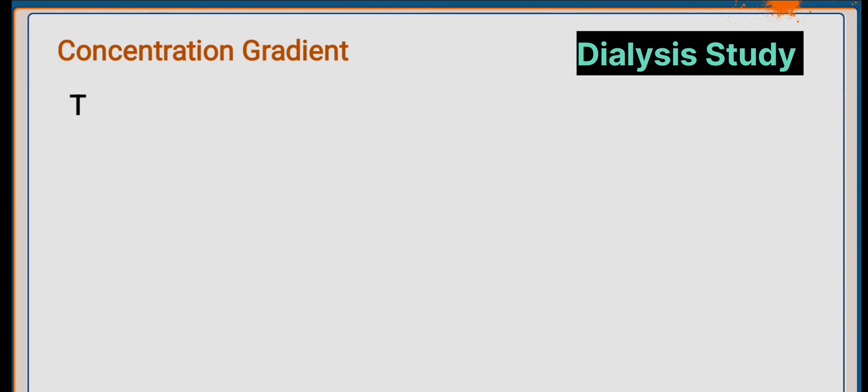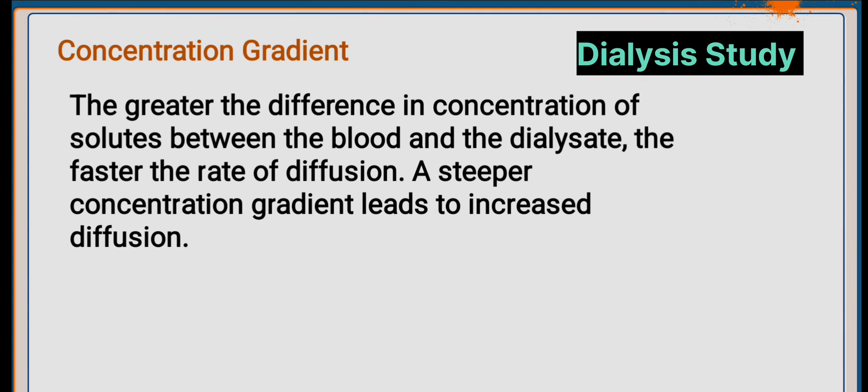Second is the concentration gradient. The greater the difference in concentration of solutes between blood and dialysate, the faster the rate of diffusion. A steeper concentration gradient leads to increased diffusion.